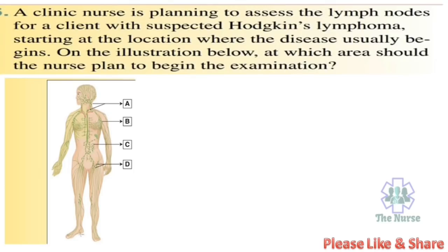Next question: A clinic nurse is planning to assess the lymph nodes for a client with suspected Hodgkin's lymphoma, starting at the location where the disease usually begins. At which area should the nurse plan to begin the examination? Correct answer: Location A — that is the cervical and neck lymph nodes. Hodgkin's lymphoma will start from the cervical and neck lymph nodes.